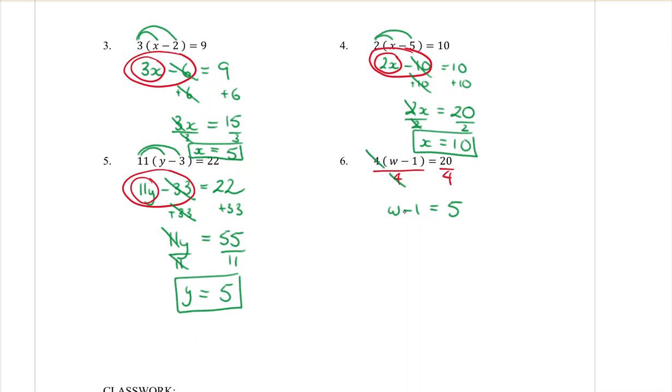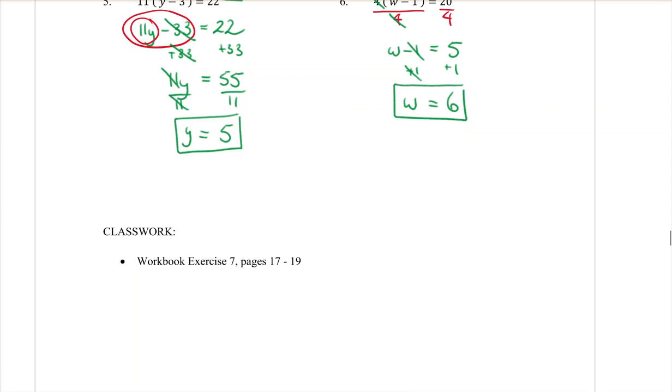Then I've still got this minus 1 here, so the opposite would be to add 1. Cross that off, and w would be equal to 5 plus 1, which is 6. Now you could redo that question by expanding first, and you should get the exact same answer. So it's okay for you to use either method. Okay, so that's the end of the examples. You now need to do exercise 7, which is pages 17 to 19 of your workbooklet.